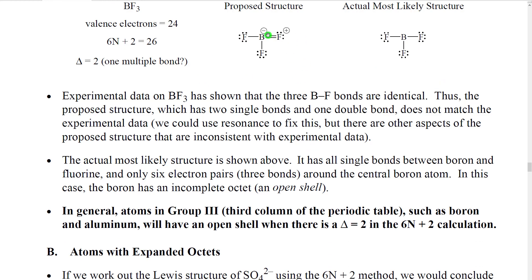Now, there are some other justifications for this. For example, it's been shown experimentally that the three boron to fluorine bonds are identical. They have the same length, the same strength. When we have a molecule with single bonds and double bonds between the same elements, the double bonds tend to be shorter and stronger. So having three identical bonds is more consistent with this structure than that structure where we have two bonds and then one that's different.